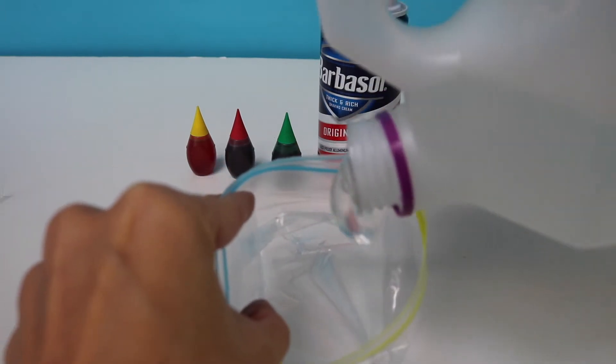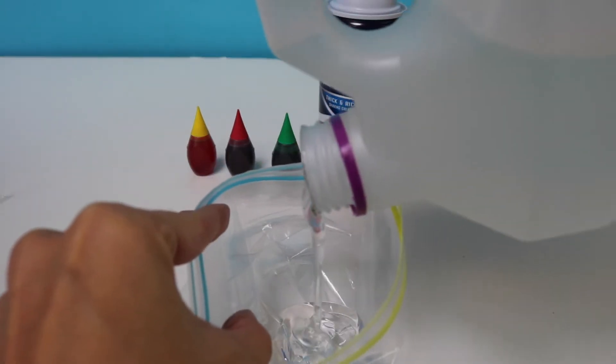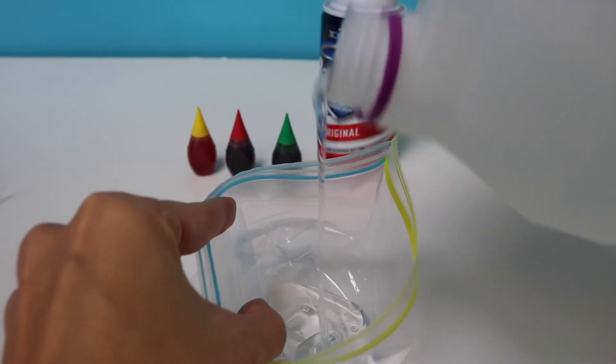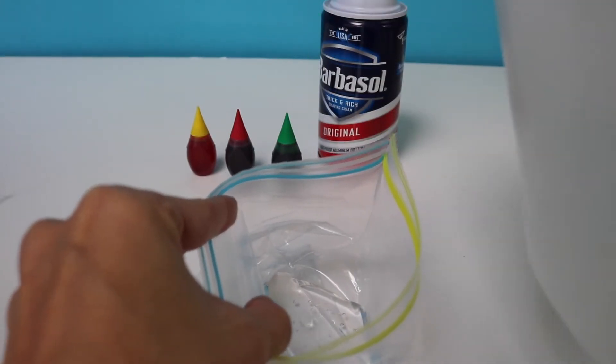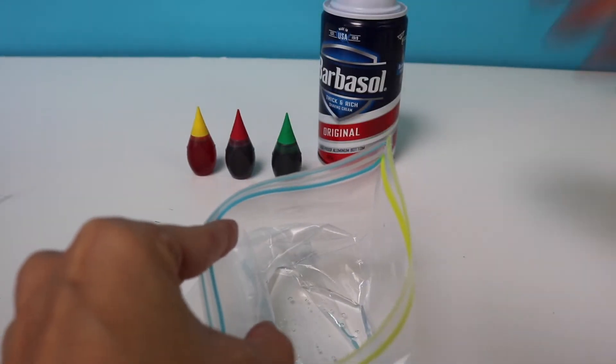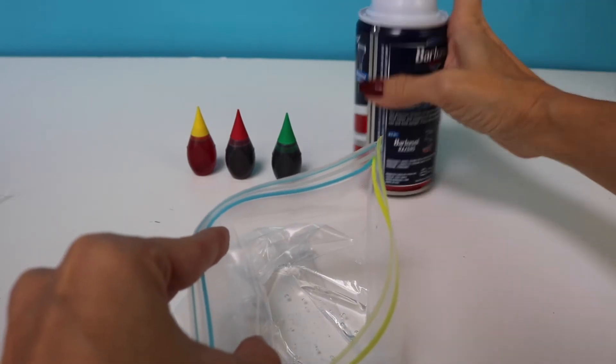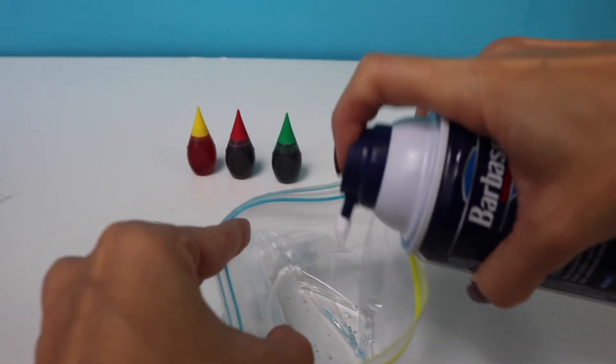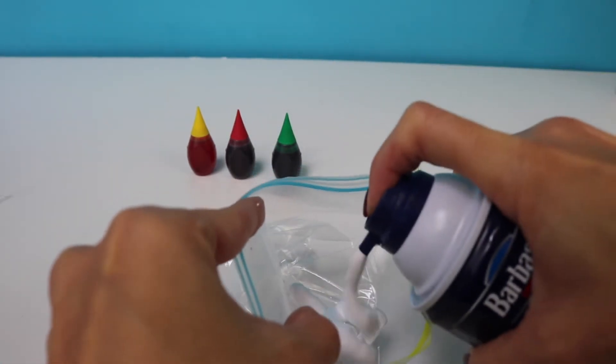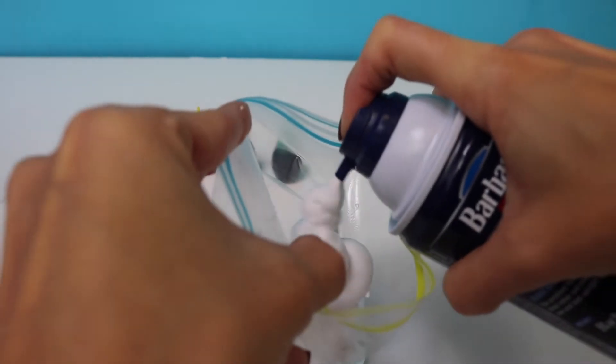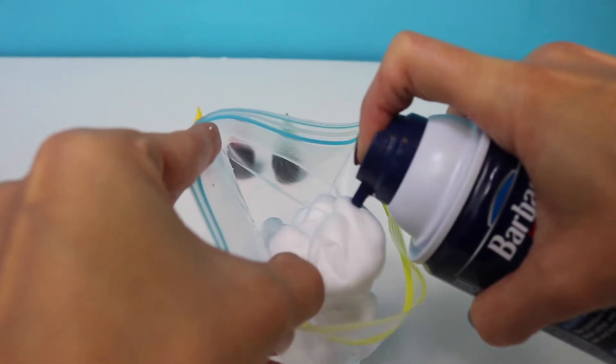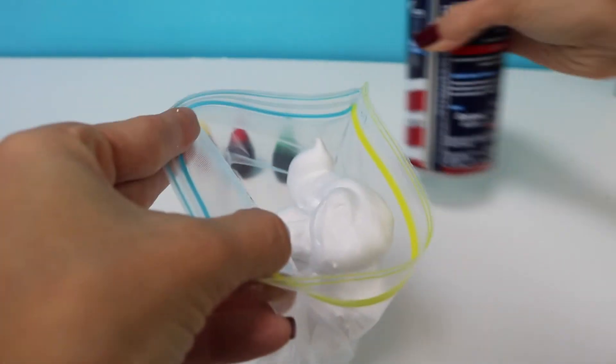Now we're going to add some more slime glue. We're going to make a different color this time. So again we add our slime glue into the bag. Now we're going to add our shaving cream. Let's squirt that shaving cream in there. There it goes. This is why you need the cream kind and not shaving gel.